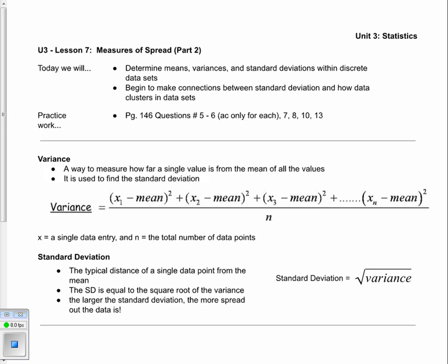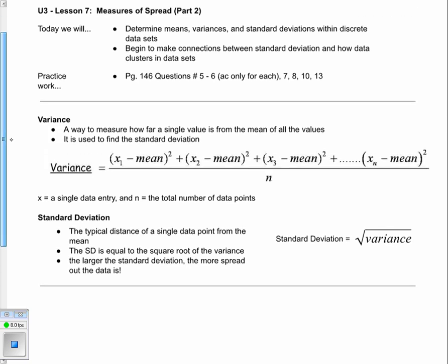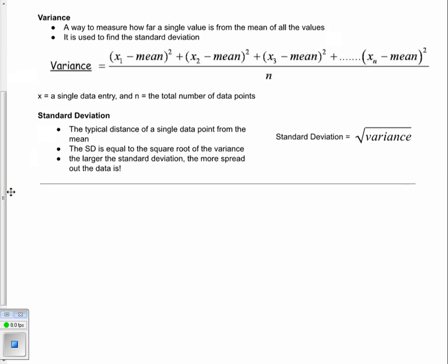Variance and standard deviation tell you how consistent a particular data point is relative to the average of all the other data points that are in a data set. So we'll take a look first here at variance. And I know when you're looking at this, it kind of looks like a lot of numbers and kind of confusing and whatnot. But it's actually not nearly as bad as you think it is. So variance is simply a way to measure how far a single value is from the mean or the average of all the other values that's in the data. And we need to find variance so that we can find this concept known as standard deviation.